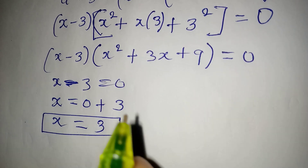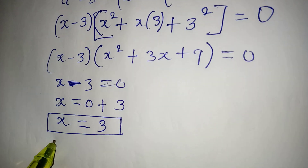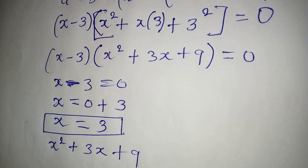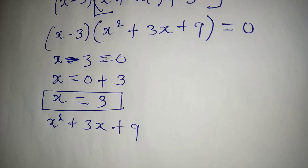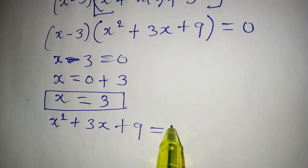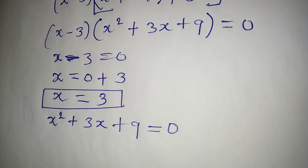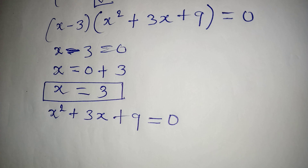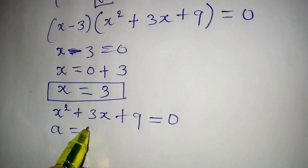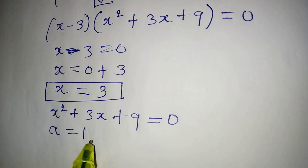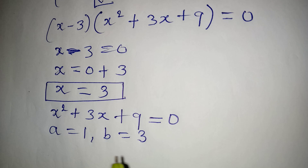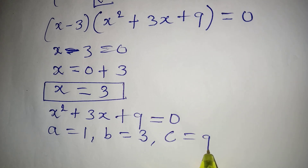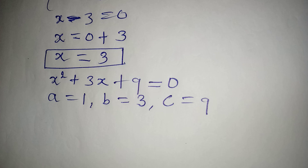To get the other solutions, we are going to pick the quadratic expression x squared plus 3x plus 9. We equate this to 0 to get a quadratic equation. Let's use the quadratic formula, where a equals 1 (the coefficient of x squared), b equals 3 (the coefficient of x), and c equals 9 (the constant).